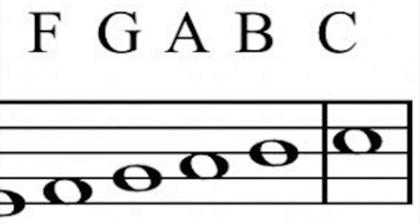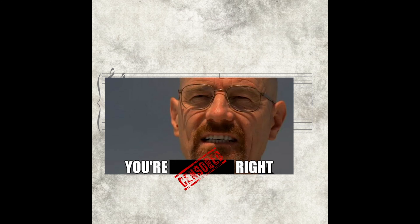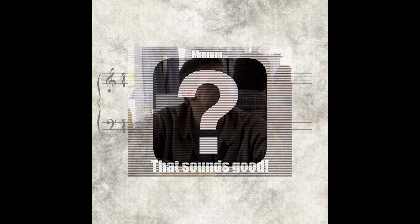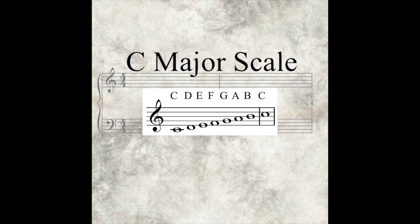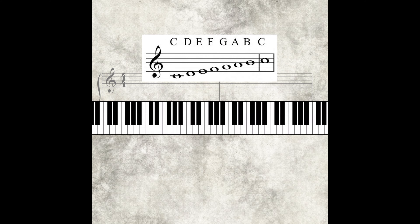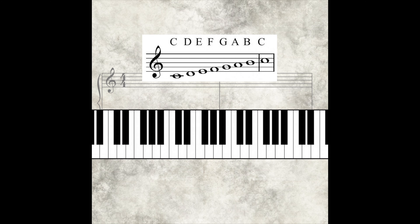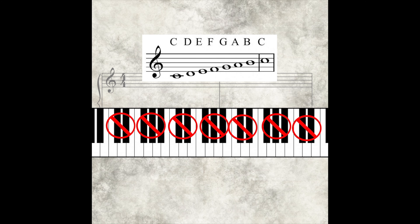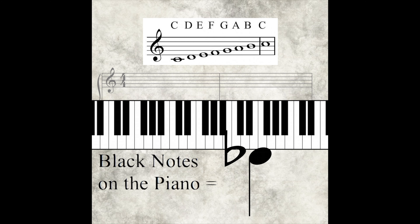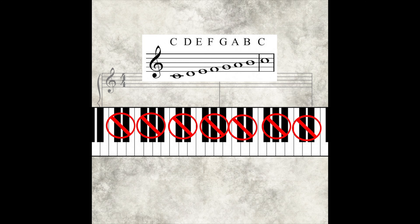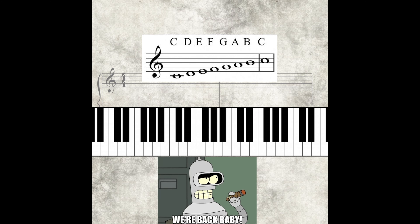Unless you've been living under a rock, you've heard these eight notes in sequence. It sounds good, right? Because your choir teacher in second grade played it, and we know for the rest of our lives this is correct. What are we playing? This is the C major scale. If we were on a piano, we would start on a C and play all the white notes until we got to the next C. We don't need to play a black note, which we will discover are sharps or flats.